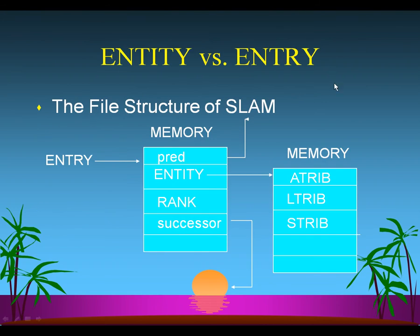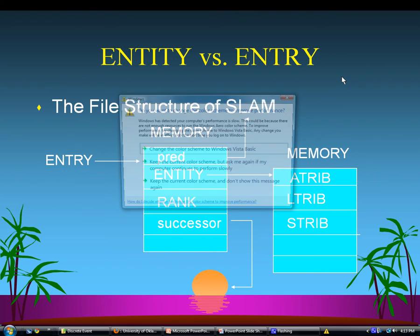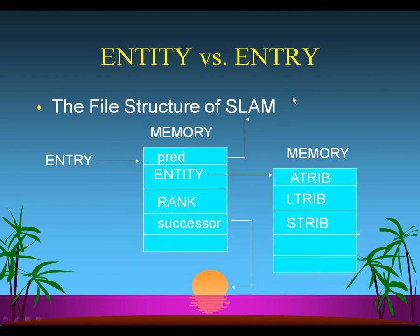Entity versus entry. We all know what an entity is — we've talked about that in the network approach to modeling and simulation. An entity is basically those things that flow through the network model. In discrete event simulation, they refer to the basic item that is being simulated. An entry, on the other hand, is basically an entry in the file system — it would refer to an entry in a file.